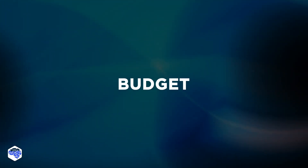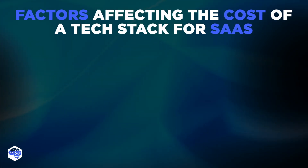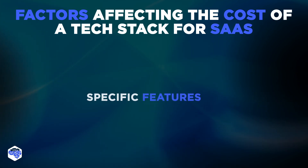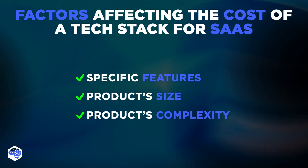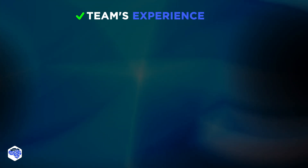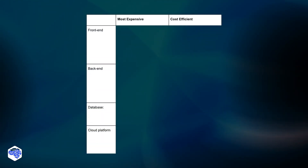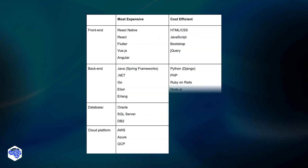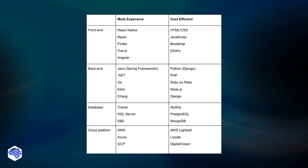Another aspect to consider is the budget. The cost of a tech stack for SaaS depends on a number of factors, such as the specific SaaS product features, the product's size and complexity, and the team's skills and experience. Here's a list of front-end, back-end, database, and cloud platform options that are typically more expensive than others. Check out the list of most expensive and cost-efficient frameworks to better understand your potential tech stack choices.